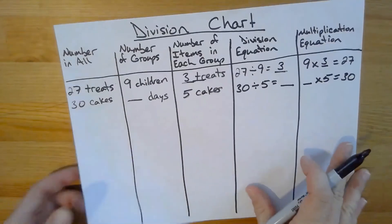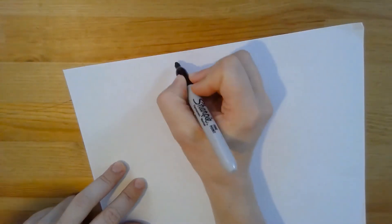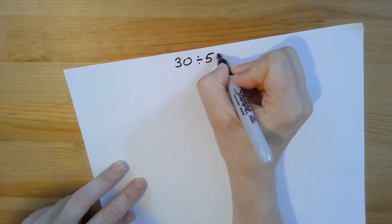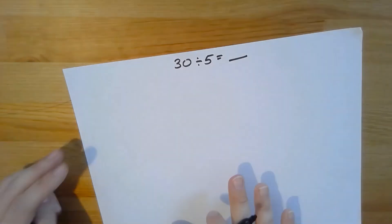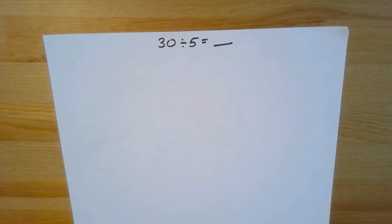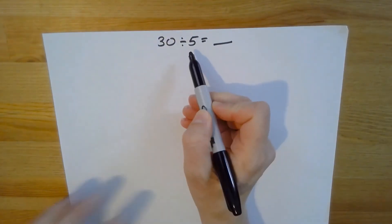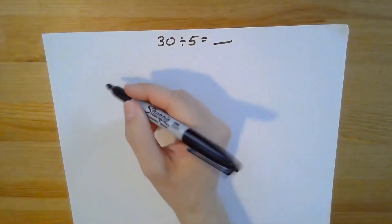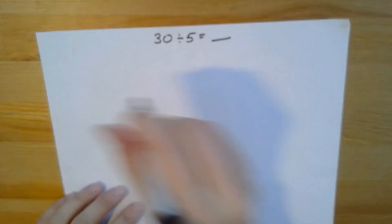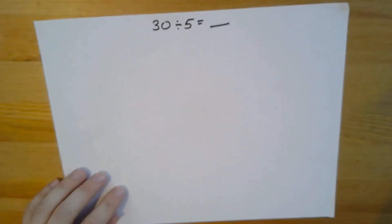Now I can solve this problem. Just as before, I'm going to write my problem at the top so I can remember what it is. So now I have 30 in all divided by five will equal something. This time, I don't know the number of groups, so I can't draw circles to start with. However, I do know the number of items in each group, which is five. That means I can draw tallies in groups of five, and then when I get to 30, I'll be able to draw circles around those groups and figure out how many I have in total.